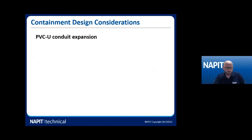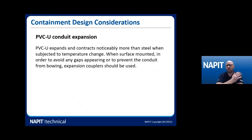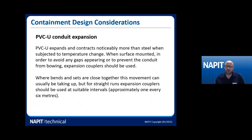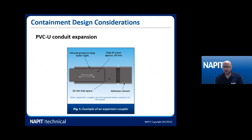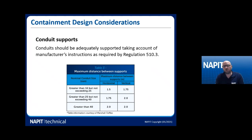When using PVC-U conduit, you need to think about how it expands, because it expands and contracts more noticeably than steel. When surface mounted, to avoid gaps or bowing you need to consider using expansion couplers — normally where you've got bends and sets close together the movement can be taken up in those areas, but for straight runs you should install expansion couplers approximately every six metres. You glue or cement one conduit into one side of the coupler and the other is free to slide — insert about 50mm and that will allow approximately 25mm of movement each way. In areas where water-tightness is needed, use silicone grease.